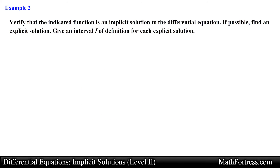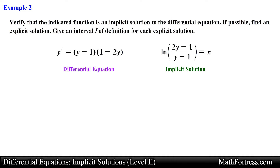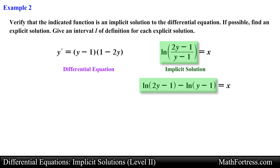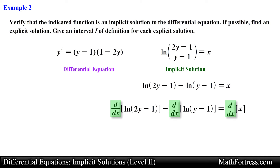Let's try the next example. The differential equation is y' equals the quantity (y-1) times the quantity (1-2y), and the implicit solution to verify is the natural log of the quantity (2y-1) divided by the quantity (y-1), equals x. Let's first verify this implicit solution. We first need to find the derivative of this implicit relation. Before we proceed, let's rewrite this expression in a more derivative-friendly form by applying the laws of logarithms to break apart the natural logarithm into a difference of logarithms. Now let's take the derivative implicitly with respect to x, and applying the chain rule we obtain the following expression.